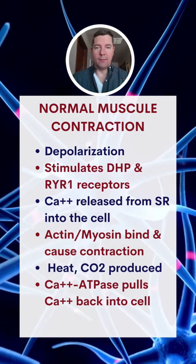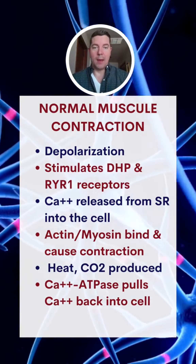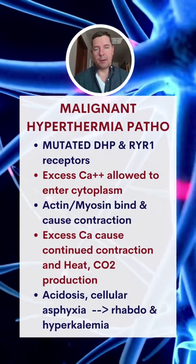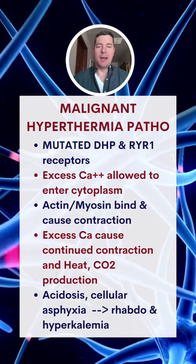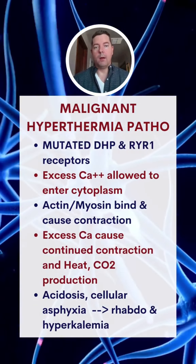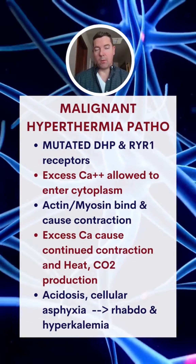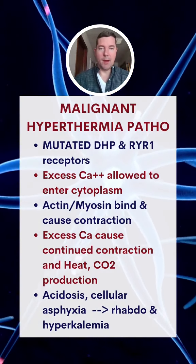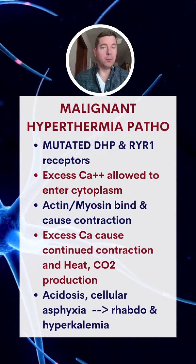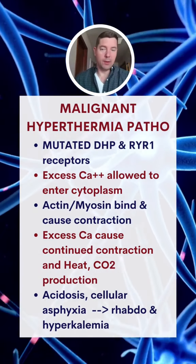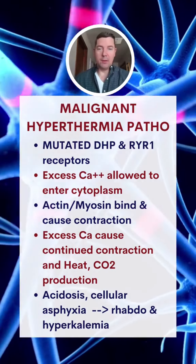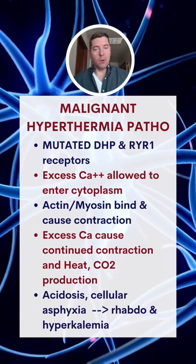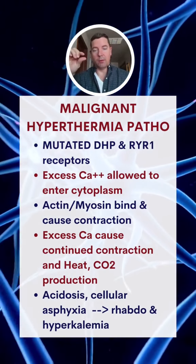Now let's look at what abnormal function looks like. The problem in malignant hyperthermia is that we have mutated DHP and/or RYR1 receptors, specifically the RYR1. What it does is it doesn't control the amount of calcium output — so a large amount of calcium is suddenly released into the cell. With that calcium out there, it's going to get utilized by actin-myosin.